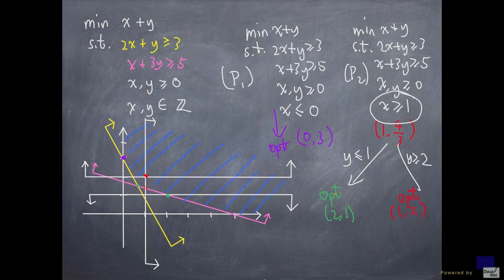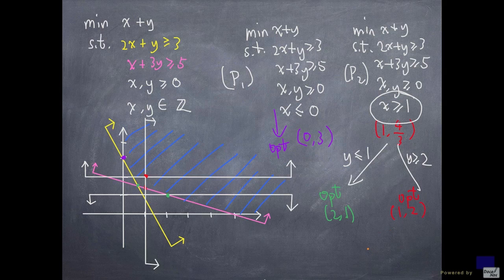Now both solutions are integers. There's no need to explore further because 1 comma 2 is the best possible integer solution subject to all these constraints. And 2 comma 1 is the best possible integer solution subject to these constraints. And there's no other values for y that we need to consider.